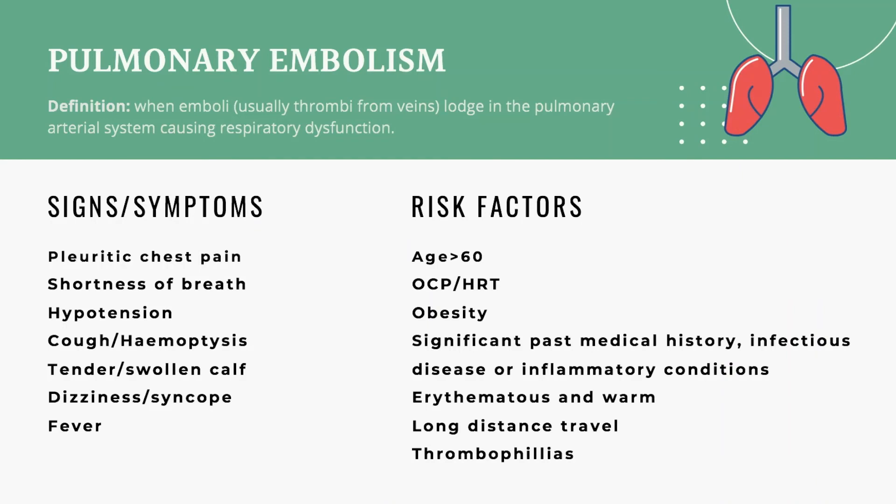This patient has a pulmonary embolism, which is when emboli — usually thrombi that build up from veins — lodge in the pulmonary vasculature causing respiratory dysfunction. Signs and symptoms you may see include pleuritic chest pain, shortness of breath, hypertension, cough, hemoptysis — which is coughing up blood — a tender and swollen calf which may indicate DVT, dizziness, syncope, and fever.